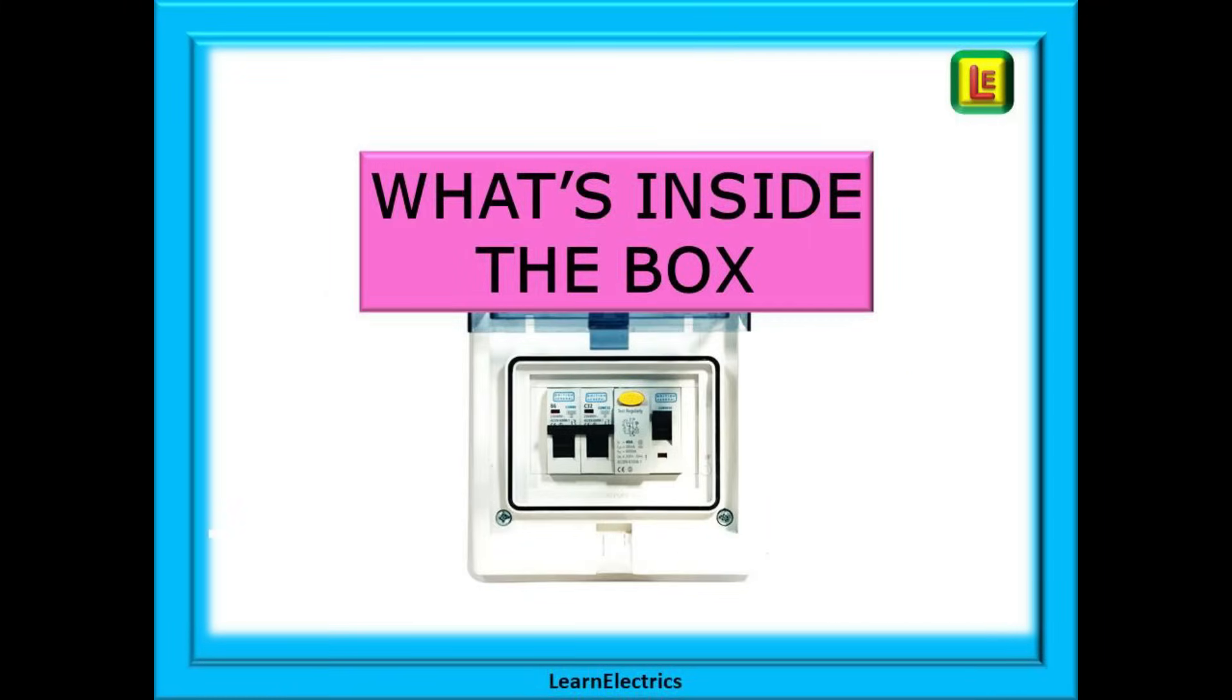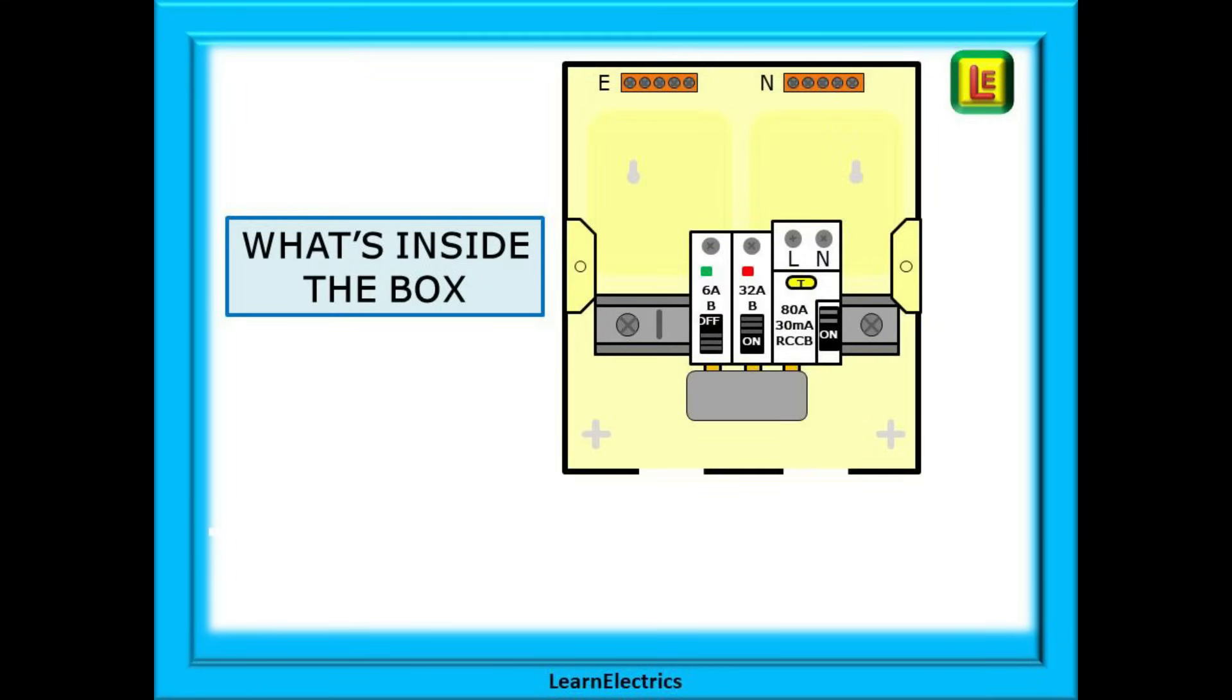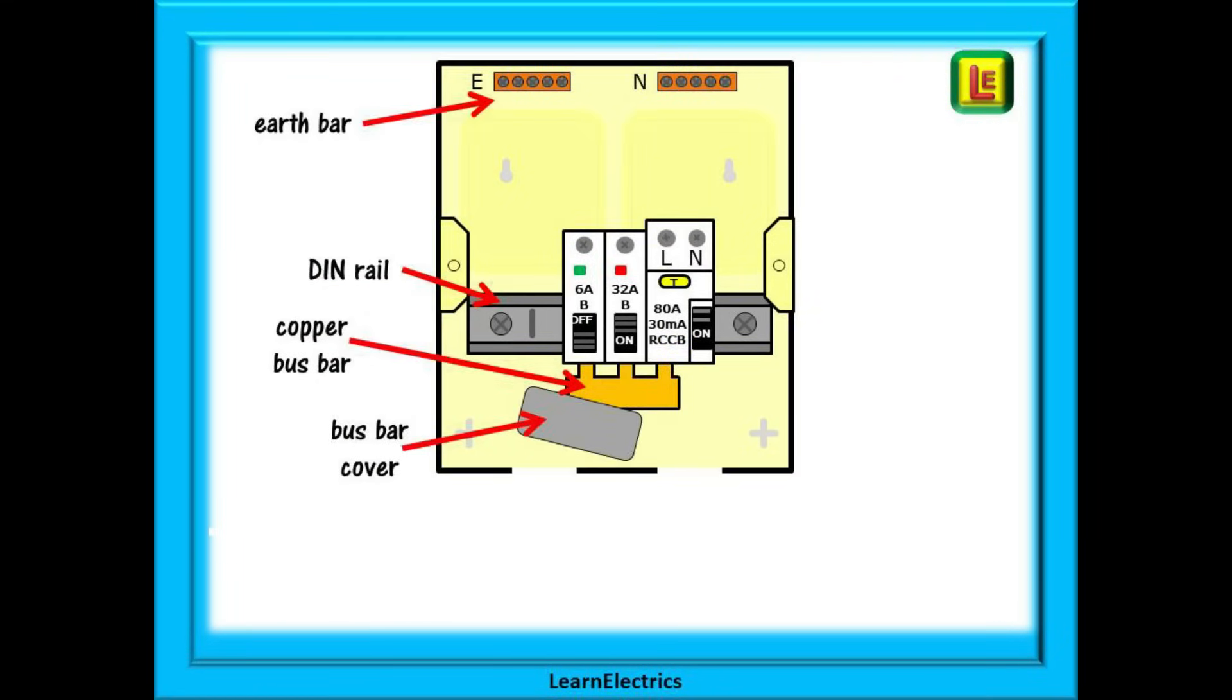Let's start by looking at what is inside the box inside the garage unit as supplied by the wholesaler. This will typically be what the inside parts are. Starting at the top left we have the earth bar, then a DIN rail which is the standard method of mounting devices now, a copper bus bar to link the devices together with 230 volts and most importantly a plastic cover for the bus bar to prevent accidental contact with live parts.